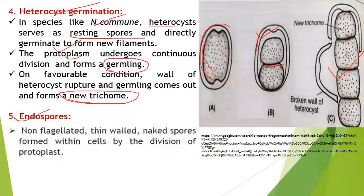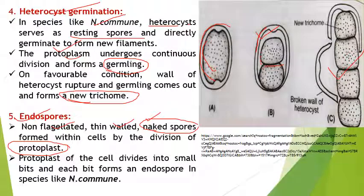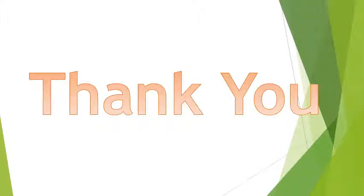The last structure is endospores. These are non-flagellated, thin-walled, naked spores — meaning there is no protective covering present. These are formed within the cell by the division of protoplasm. The protoplasm is divided into small pieces, and each piece behaves as an endospore. This structure is also present in species of Nostoc like Nostoc commune. So this is all about the genus Nostoc — thank you, have a great day.